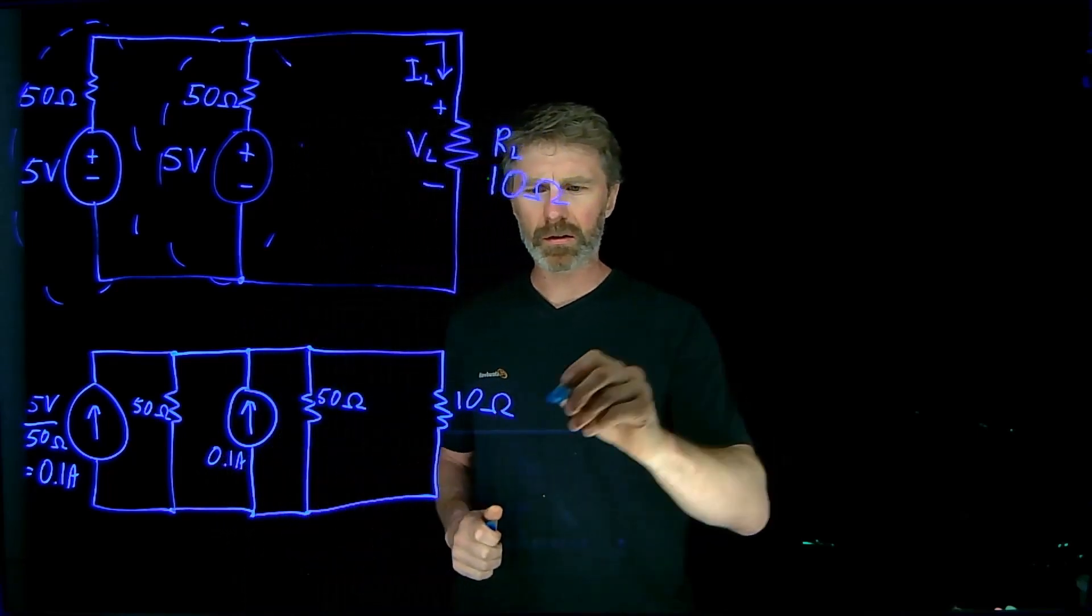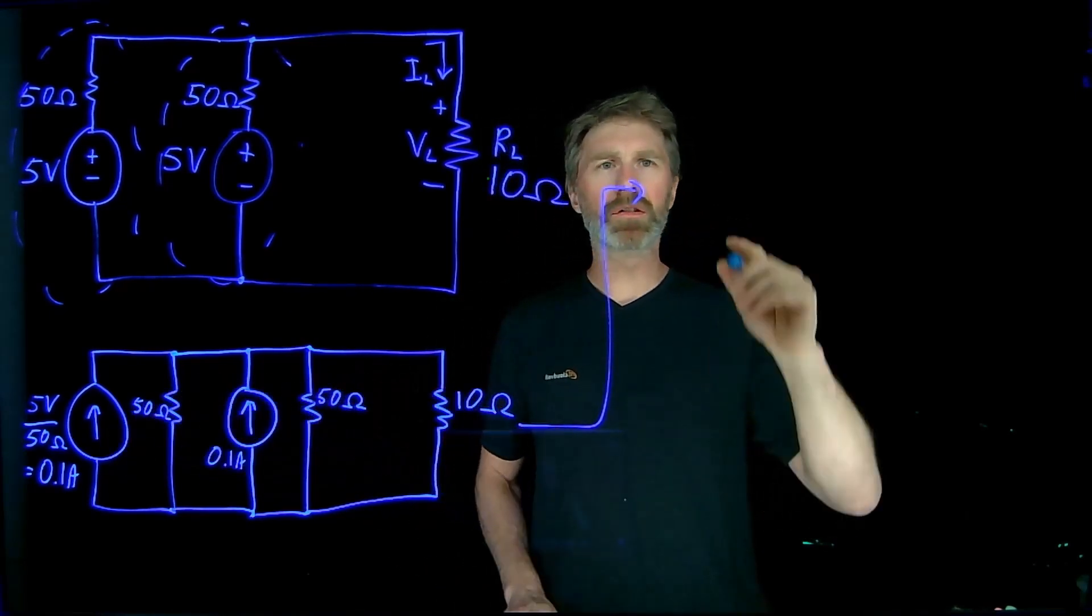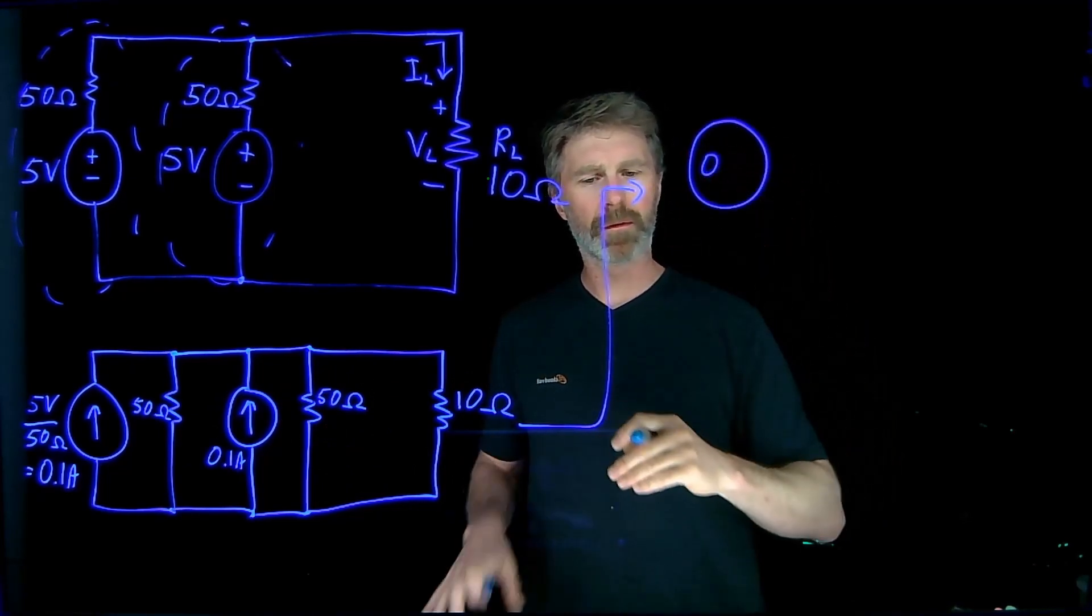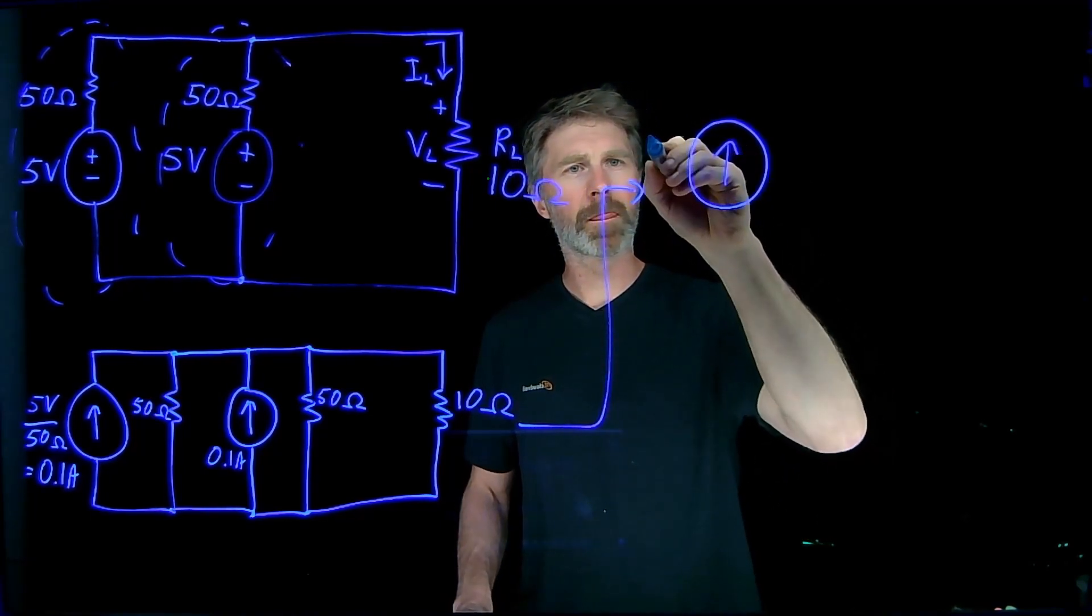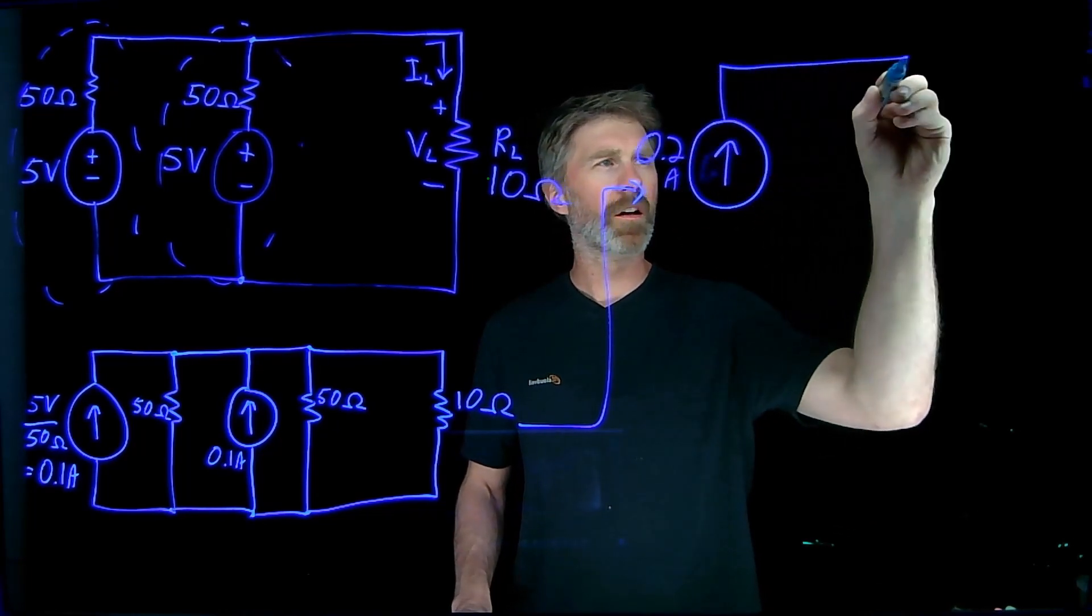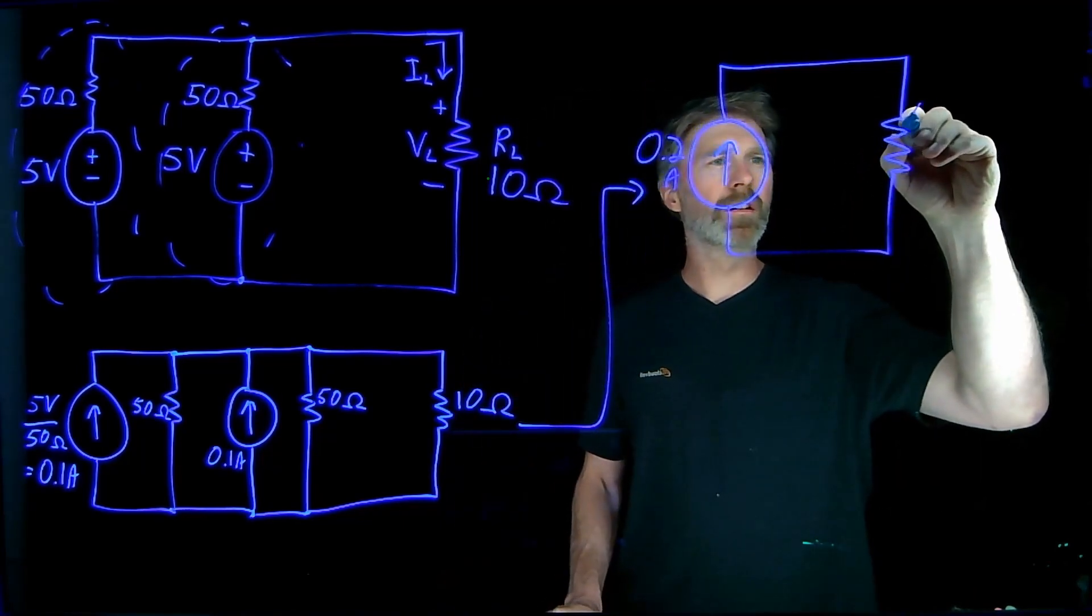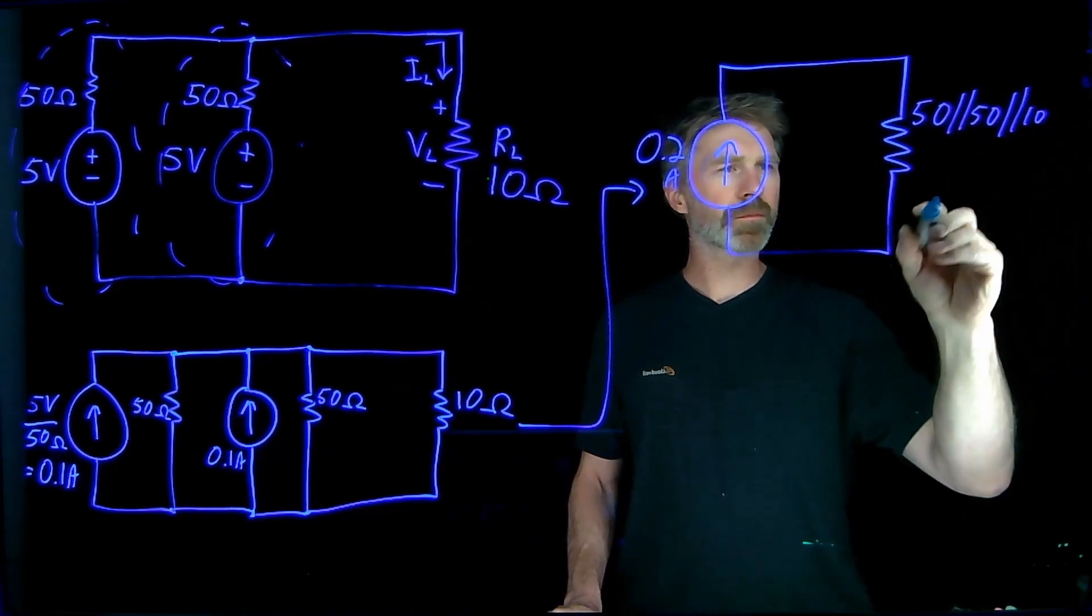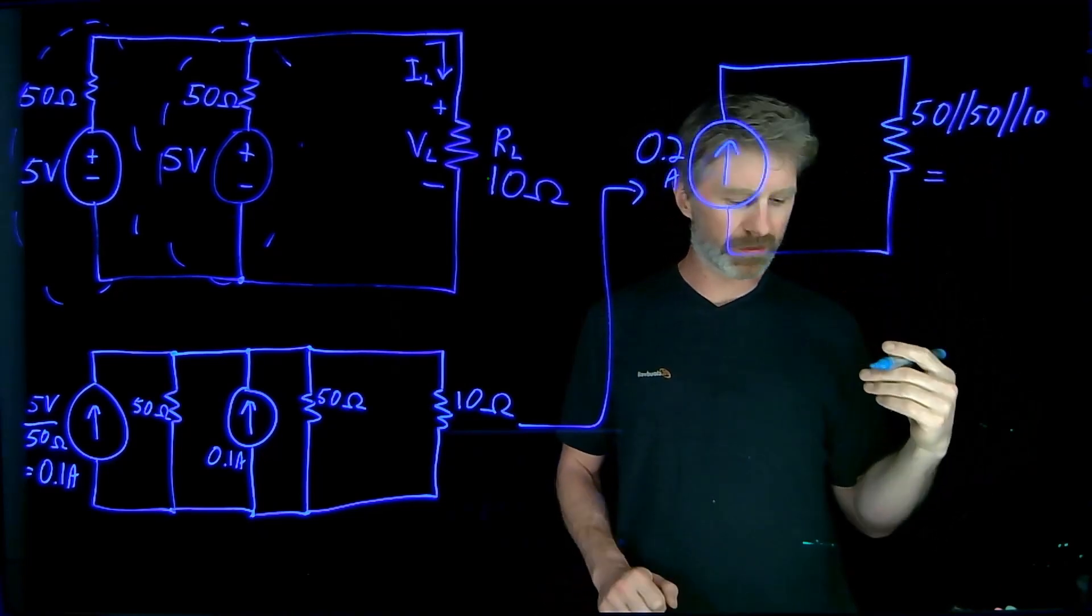I can redraw this combining those current sources and these resistors. So those two current sources can combine together to give me 0.2 amps. And those resistors can also combine together to give me the equivalent of 50 ohms in parallel with 50 ohms in parallel with 10 ohms. And if I go through that calculation, 1 over 50 plus 1 over 50 plus 1 over 10, and then the inverse of that, I come up with 7.14 ohms.